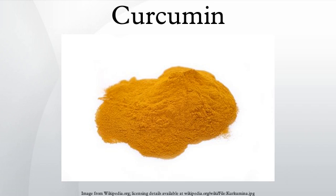Curcumin is a diarylheptanoid. It is the principal curcuminoid of the popular South Asian spice turmeric, which is a member of the ginger family. Turmeric's other two curcuminoids are desmethoxycurcumin and bisdesmethoxycurcumin. The curcuminoids are natural phenols that are responsible for the yellow color of turmeric.